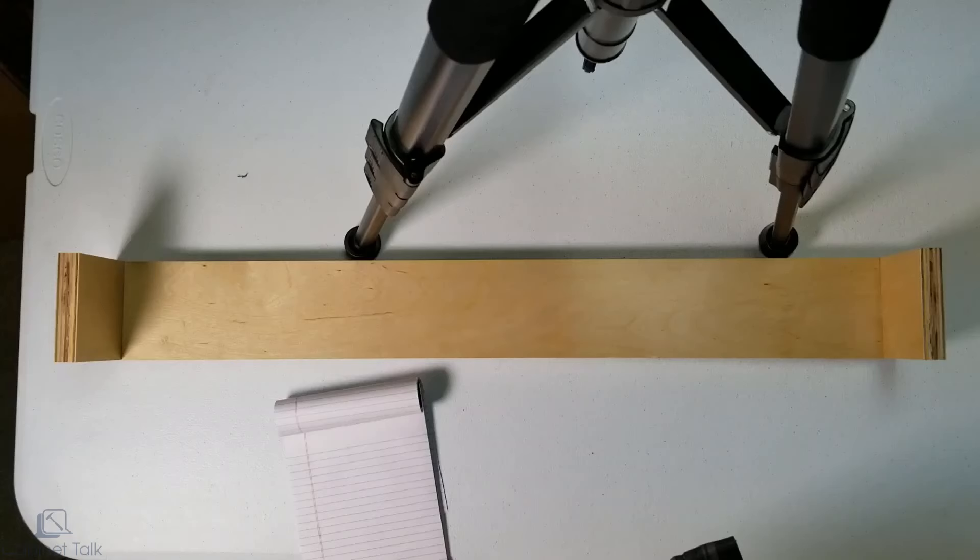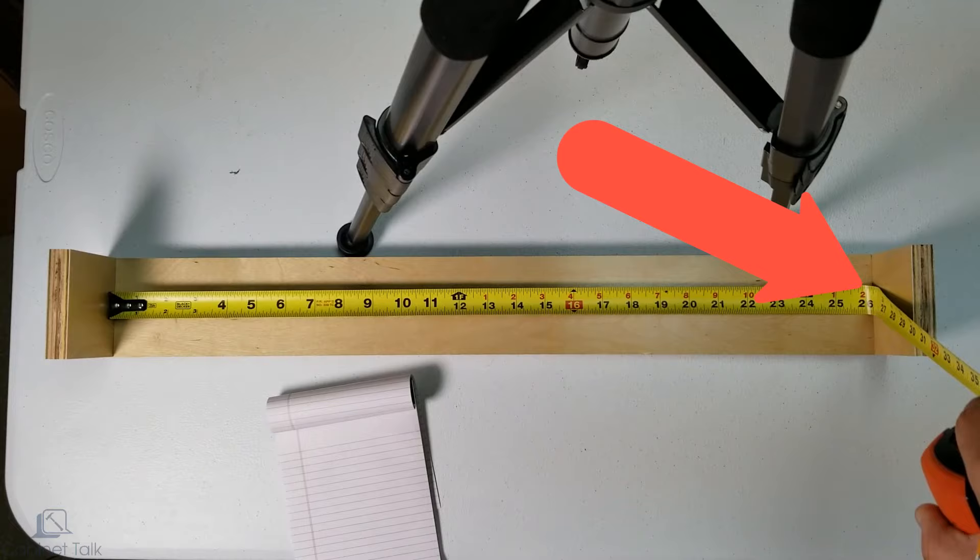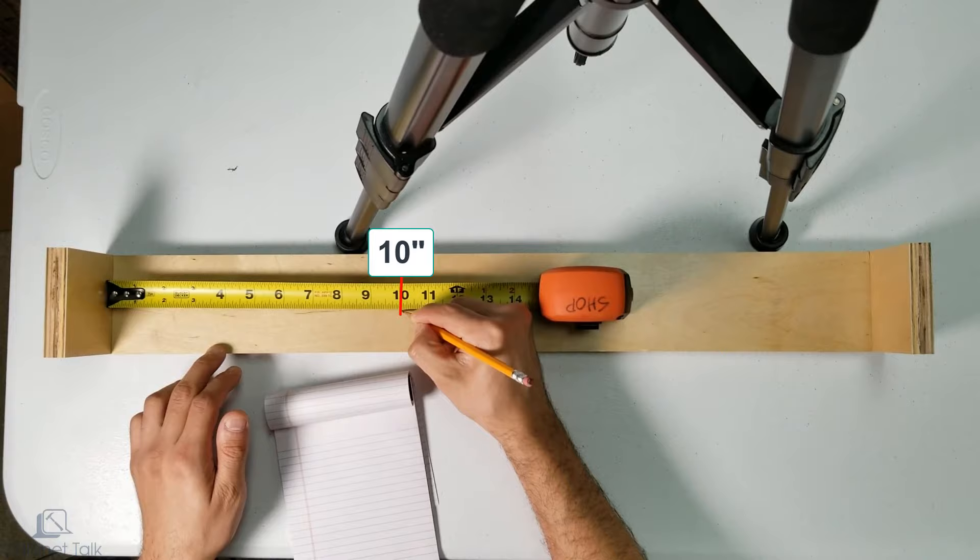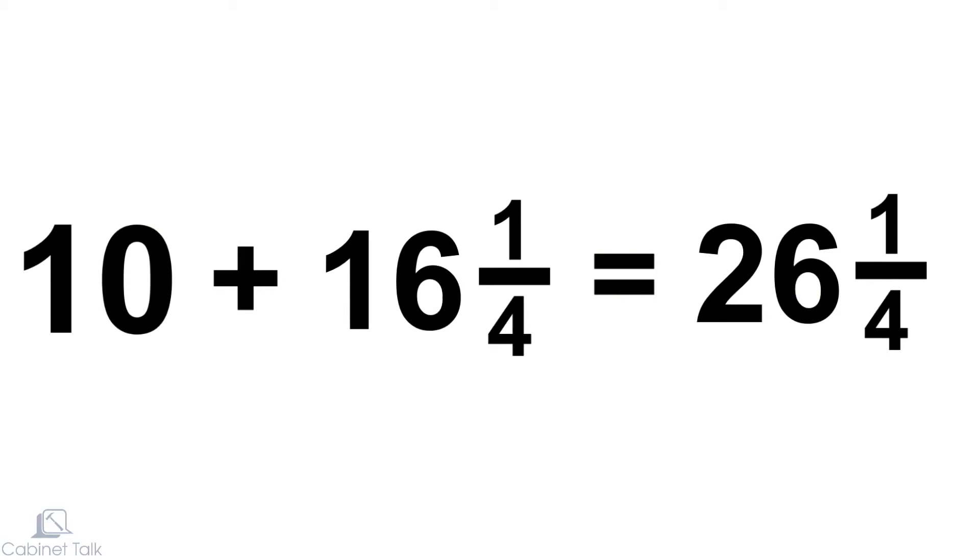Here's a tip for measuring the length between two surfaces. If you just need a rough measurement, you can bend the tape like this. For more accurate measurement, start by measuring from one side and make a mark on the whole number. In this case, 10 inches. Then measure from the other side to your pencil mark. Finally, add your measurements together.